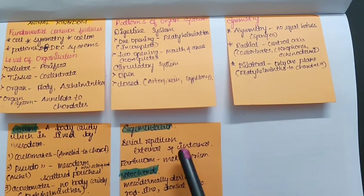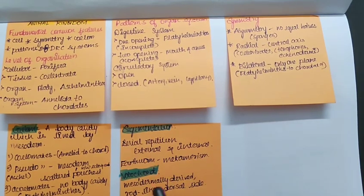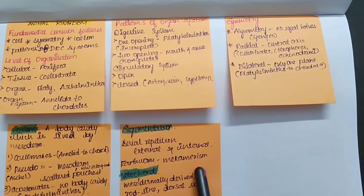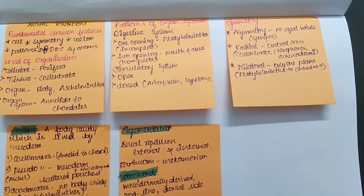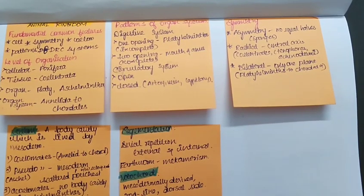So that is called as segmentation, and the term is known as metamerism. It is seen in earthworm. If you see in earthworm, it will be equal cube, cube structure we can see from outside. So that is called as segmentation.